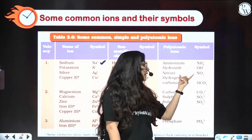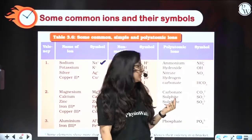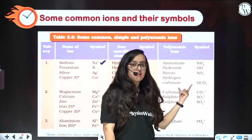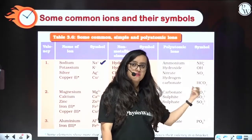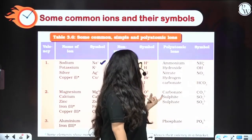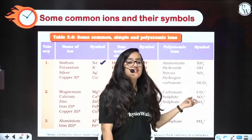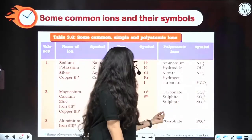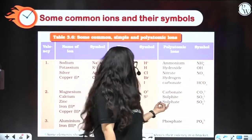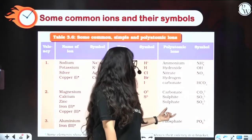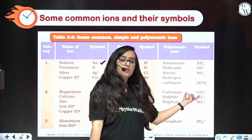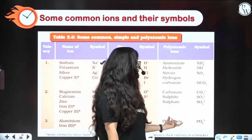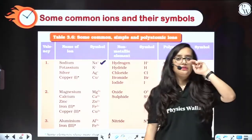Here is the list of common polyatomic ions: Nitrate is NO₃⁻. Hydrogen carbonate is HCO₃⁻. Carbonate is CO₃²⁻. Sulphite is SO₃²⁻. Sulphate is SO₄²⁻. And phosphate is PO₄³⁻.